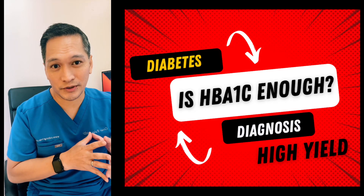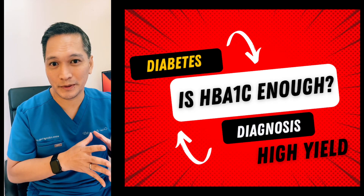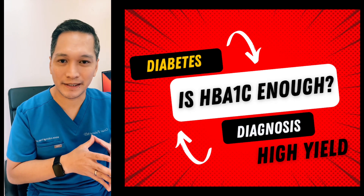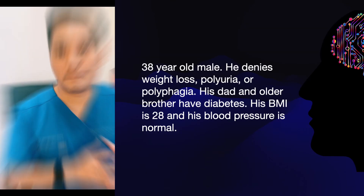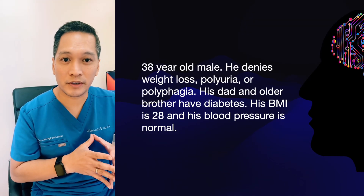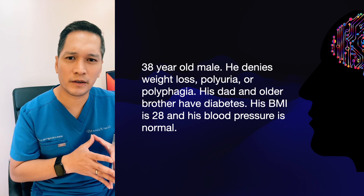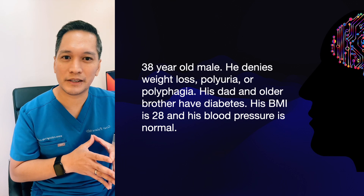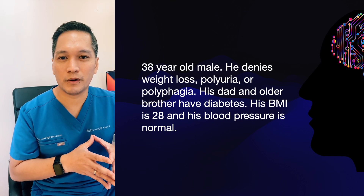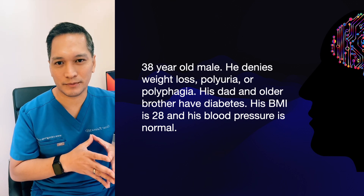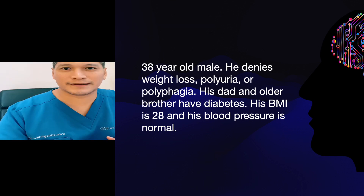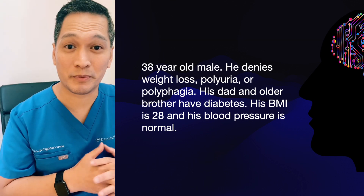On today's educational session, we will discuss how to screen for diabetes and the diagnostic criteria for diabetes. Consider patient X, a 38-year-old male who is very worried that he has diabetes. He denies weight loss, polyuria, or polyphagia. Both his older brother and dad have type 2 diabetes. His BMI is 28 and his blood pressure is normal. How do we approach this case?